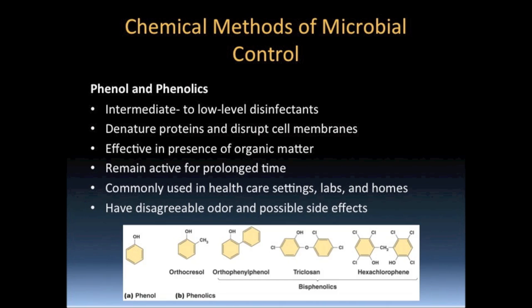Cresols and bisphenolics seen in the figure are among some of the more important of the phenolics. Triclosan, which we have heard mentioned in videos this semester, is among the bisphenolics. Phenol and phenolics are intermediate to low-level disinfectants. Most of these compounds are too toxic to utilize as antiseptics. Triclosan, found in many household soaps, is one of the phenolics that is used antiseptically. Phenol and phenolics act to inhibit microbial growth by denaturing proteins and damaging cytoplasmic membranes.